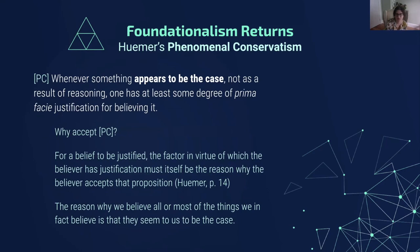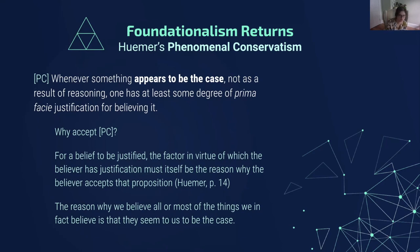This fifth kind of foundational belief fits really well with Humer's phenomenal conservatism view. Phenomenal conservatism says that whenever something appears to be the case — not as a result of reasoning, that is non-inferentially — one has at least some degree of prima facie justification for believing it. This is Humer's view of justification — a foundationalist, internalist view. Why accept phenomenal conservatism? On his view, for a belief to be justified, the factor in virtue of which the believer has justification must itself be the reason why the believer accepts the proposition. The reason why we believe most of the things we believe is that they seem to us to be the case. Humer is building this into his theory: if it seems to you to be the case, then that's the reason why you believe it, and that's the foundation of your beliefs.